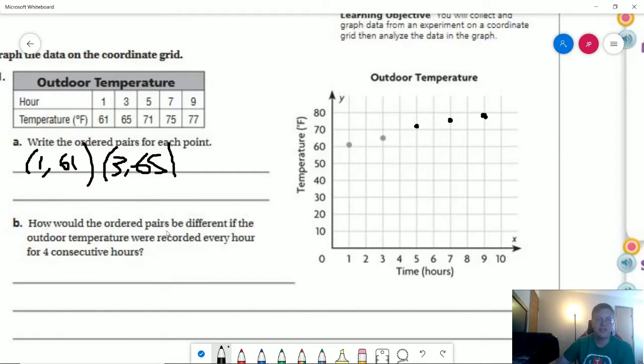How would the ordered pairs be different if the temperature were recorded every hour for four consecutive hours? Well, the ordered pairs would be a little bit different because we would not make it past here. And we also would have one, two, three, and four for our starting numbers.